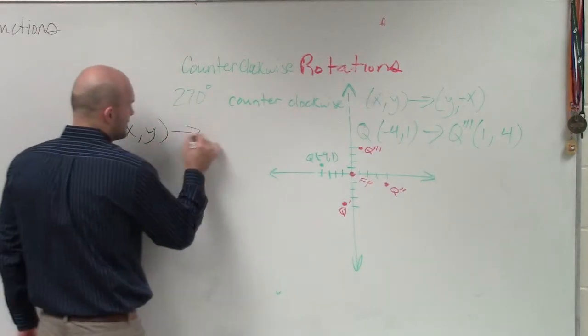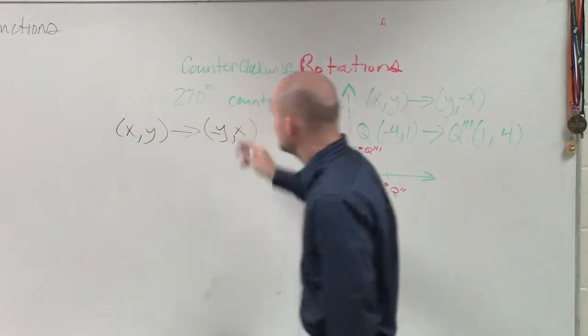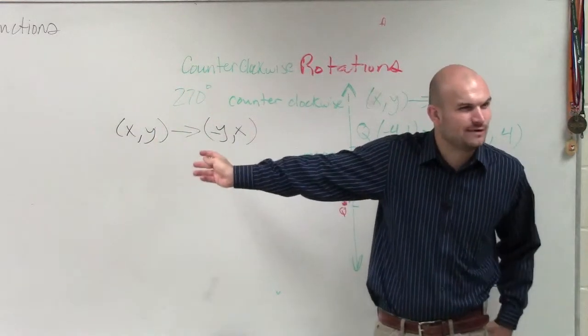If I say x comma y and I go over here and I say negative y x, that, for q, this is a reflection of what? 90, 180, or 270?